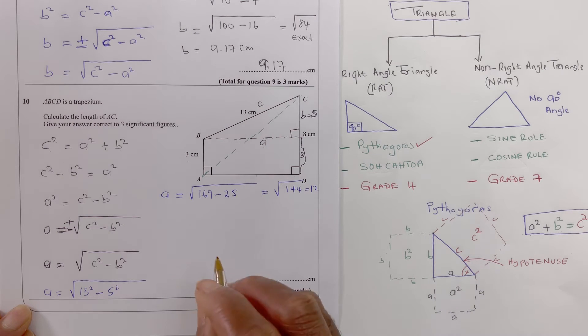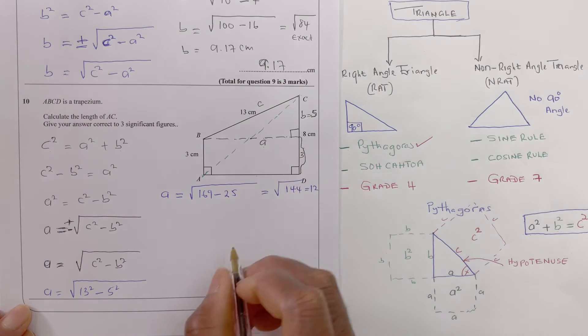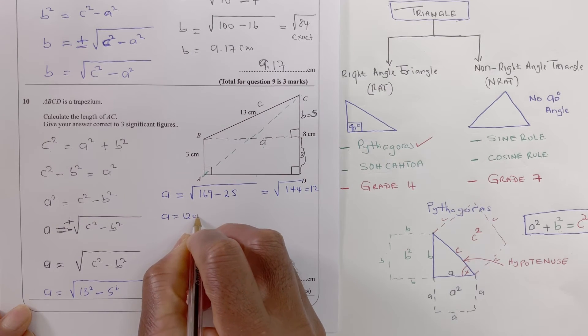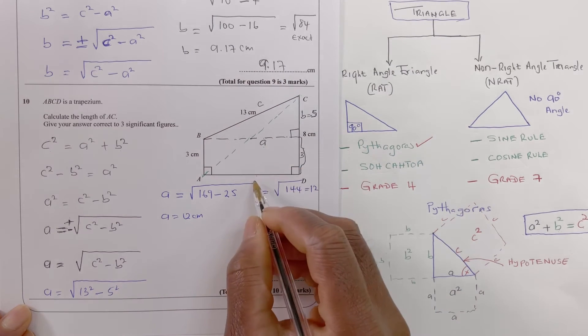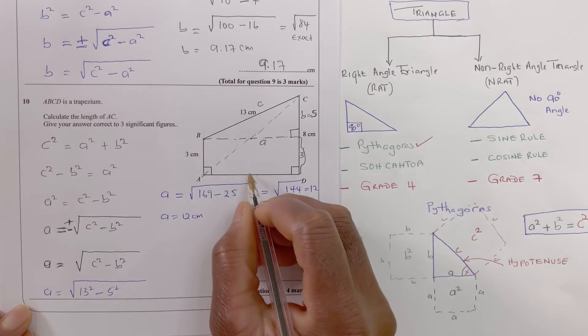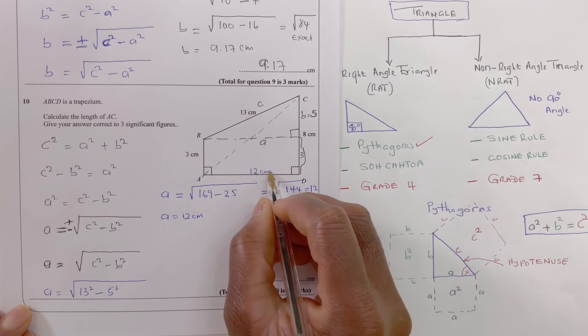So which meant that a is 12. So a equals 12 centimeters. If a is 12 now I can find this one here, the AC, because I know that this is now 12 centimeters.